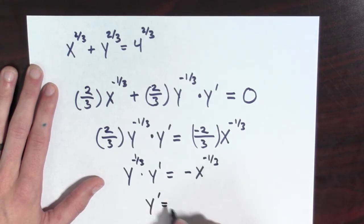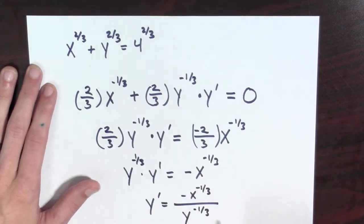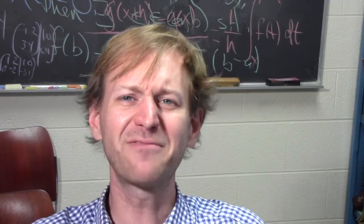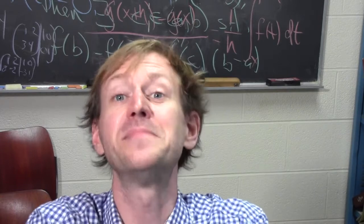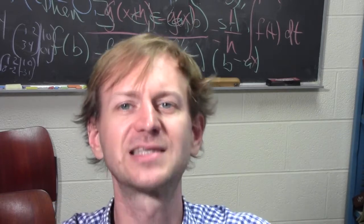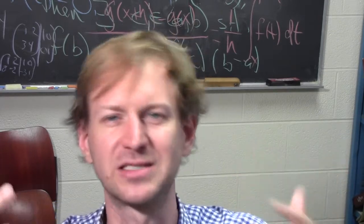Aha! And so now y' = -x^(-1/3) / y^(-1/3). So we have a formula, but how do we know it's correct? I mean, does it even make sense? Let's see if we can look at the plot and try to make some sense out of this.